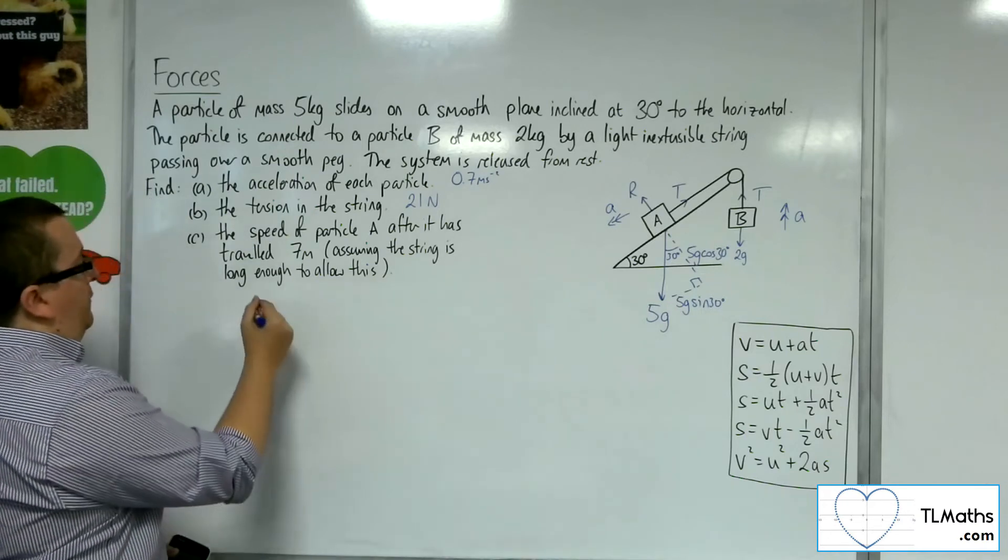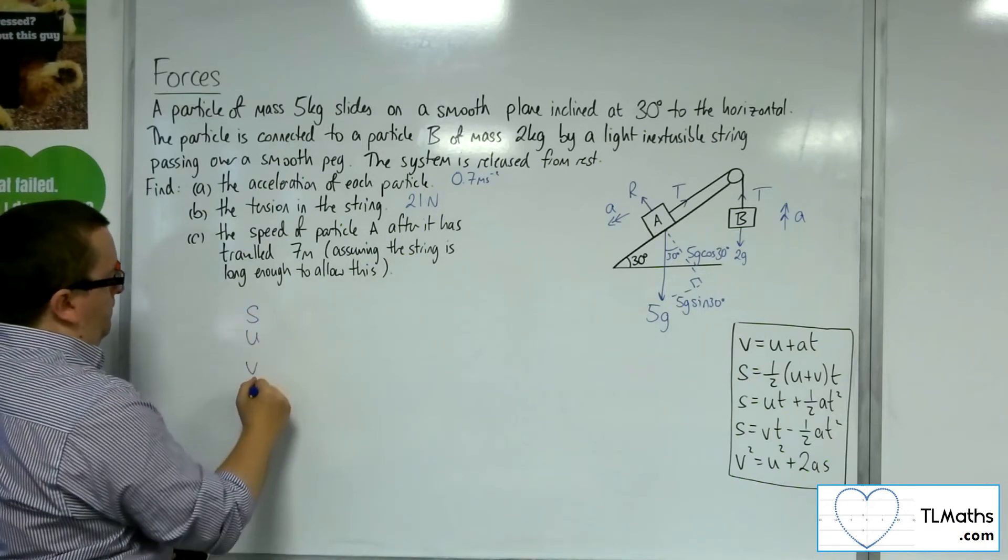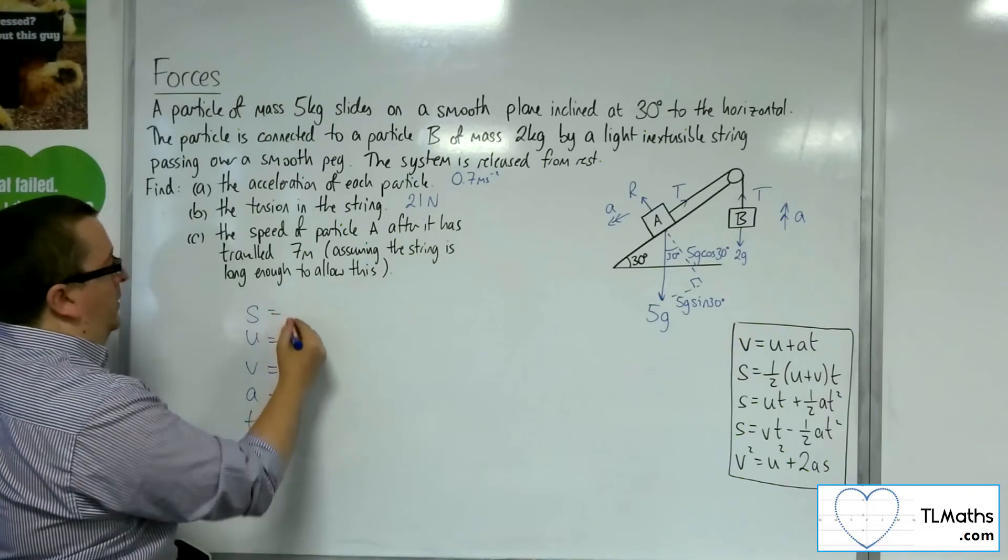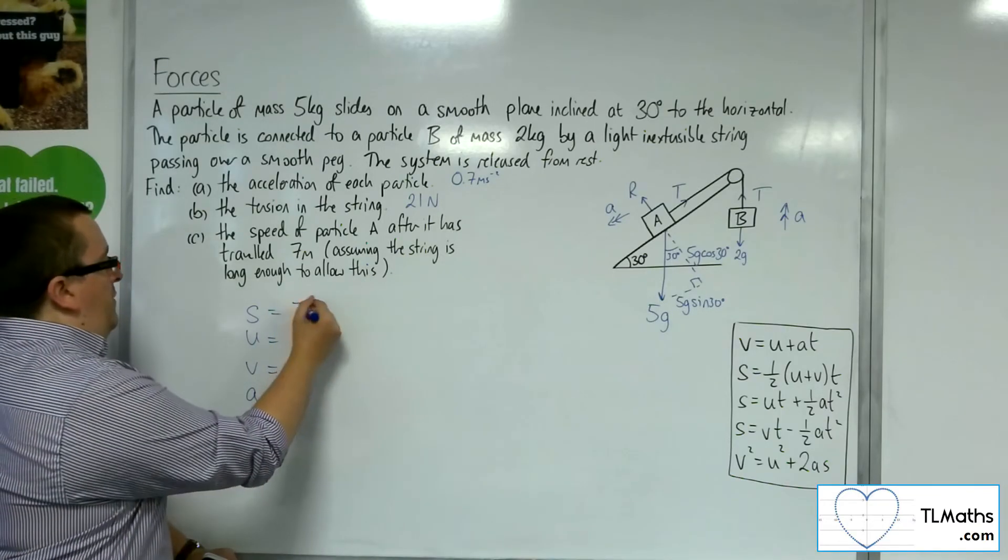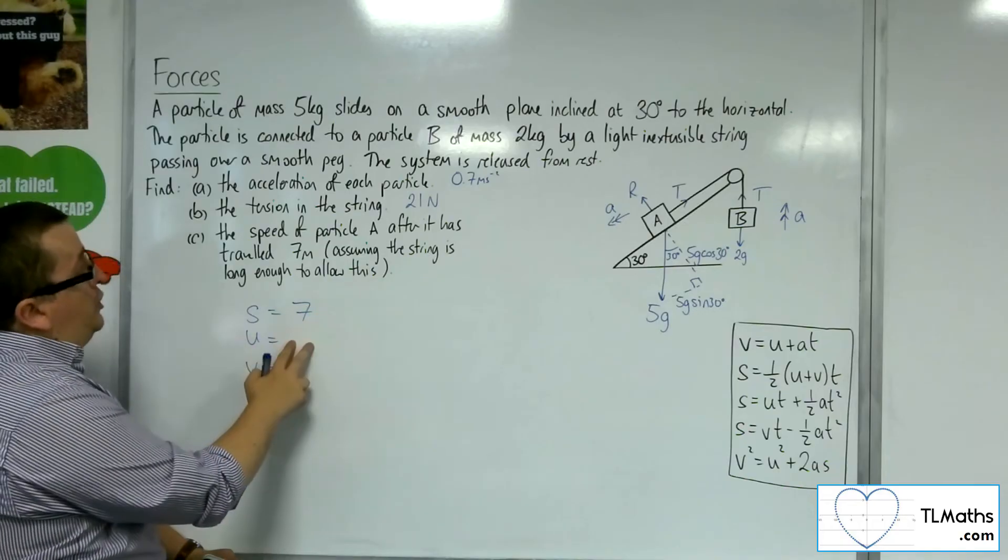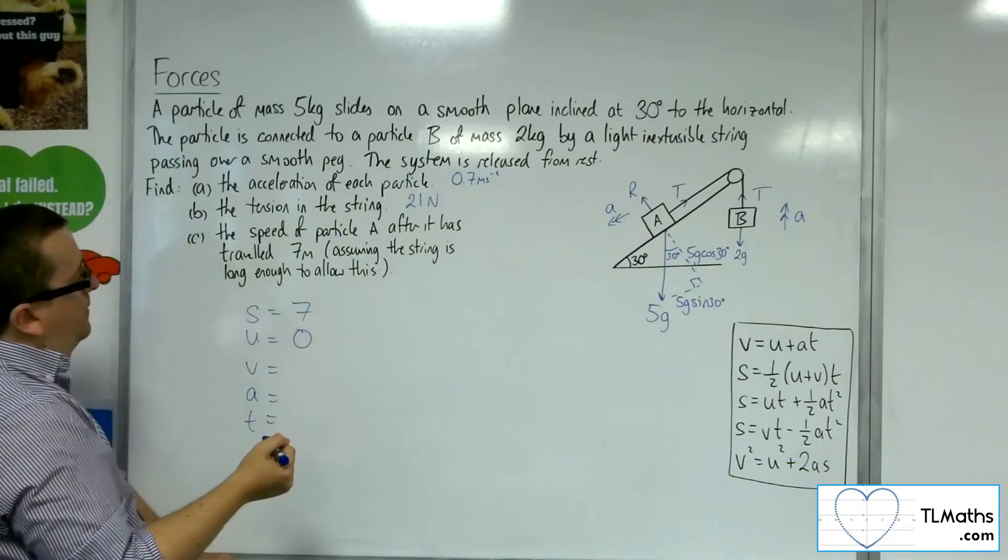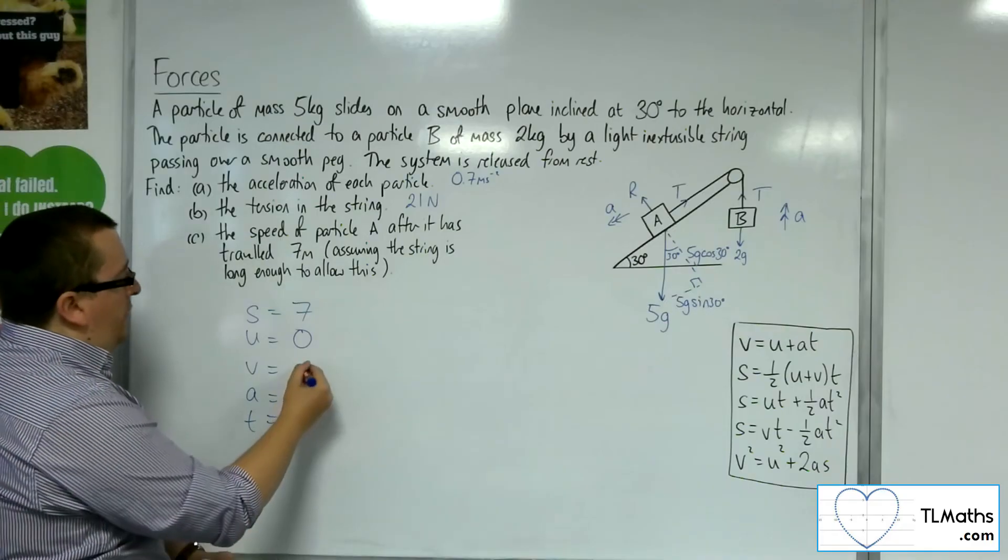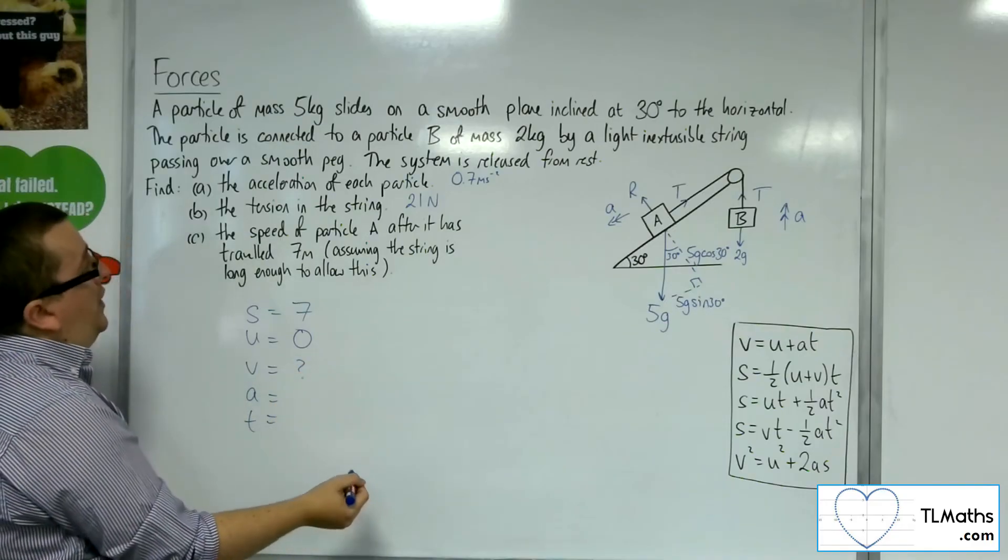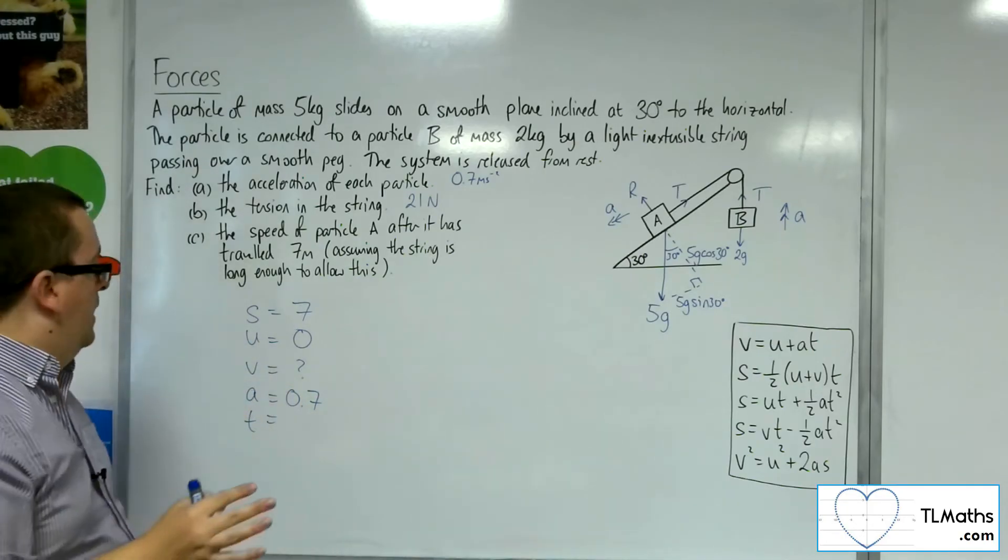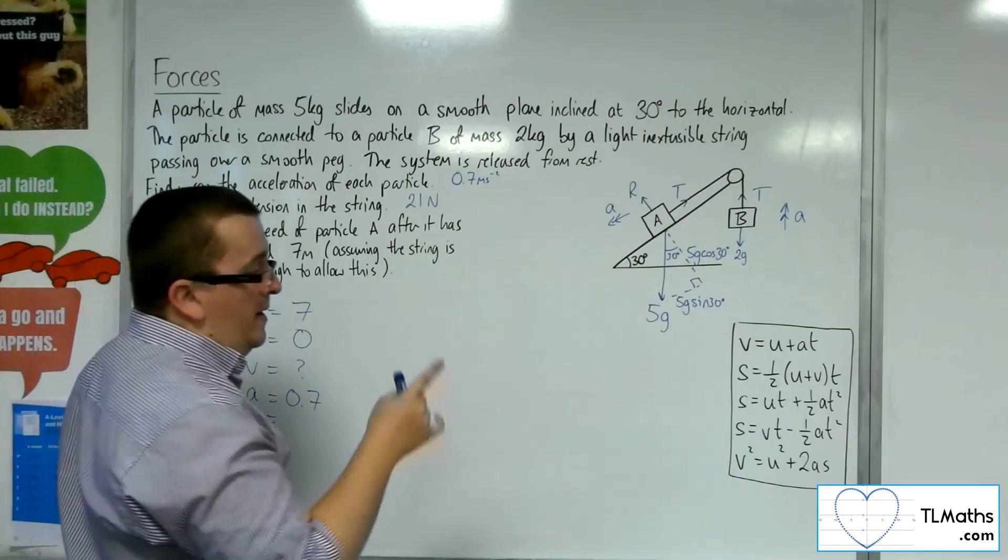So that means we're going into SUVAT. So we want to travel 7 meters. Now, the initial velocity, the system is released from rest, so the initial velocity is 0. The final velocity I don't know. That's the one I want to find. The acceleration I know is 0.7. I don't know the time, and I don't want the time. So I want the equation that doesn't have time in it, which is the fifth equation for SUVAT.